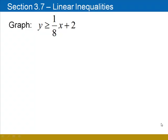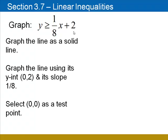Let's try another one. First thing to notice here is the equal sign under the greater than. That tells us to graph a solid line. Second, this is in slope-intercept form. We know the slope of this line is 1 eighth and the y-intercept is at 0, 2. That would be the most efficient way to graph this line.